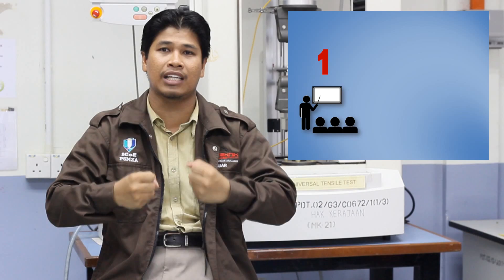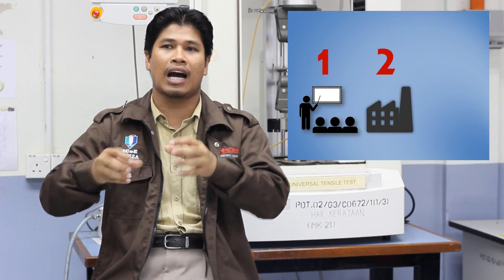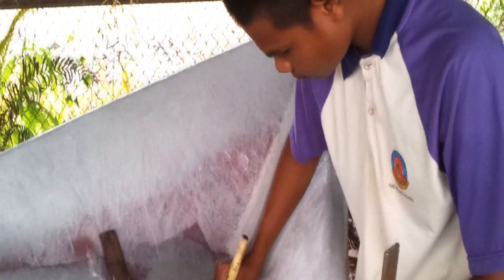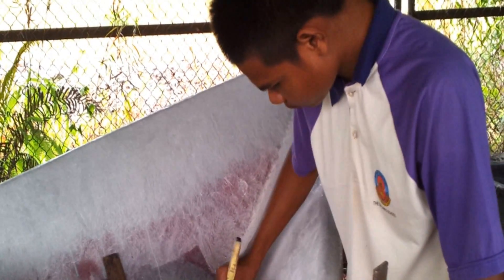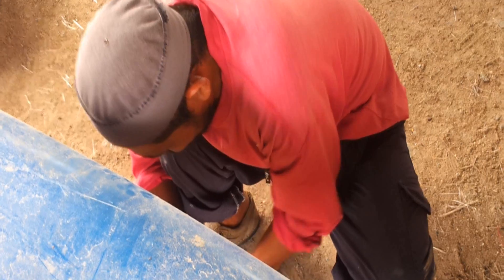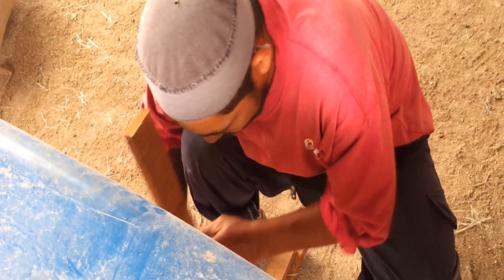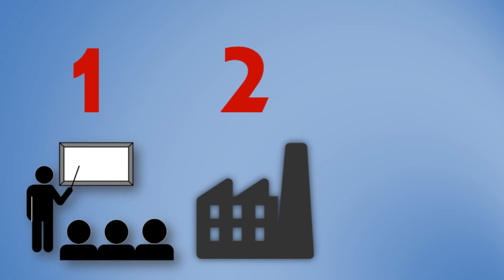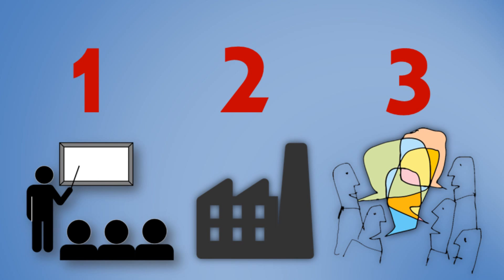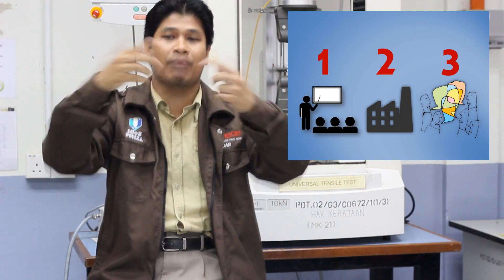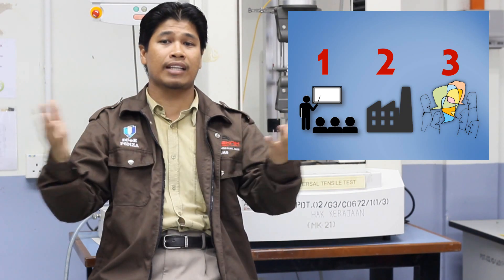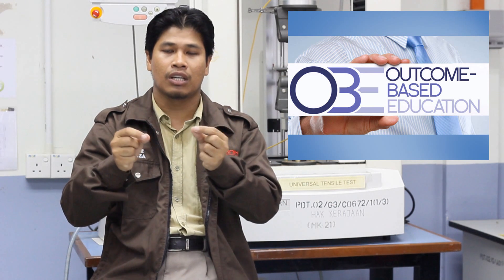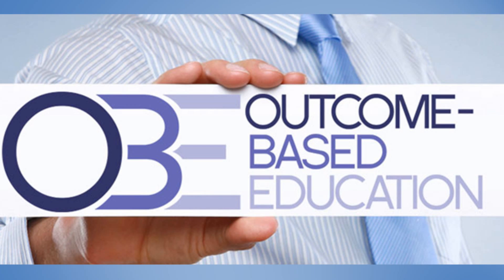My strategy in teaching plastic technology is I order some students to visit a factory or industry nearby the Polytechnic to see how the hand layup process and spray layup process are carried out in real production. After that, in the next class, the students will explain again to their other partners in the classroom. I think the method used is based on OBE, outcome-based education.